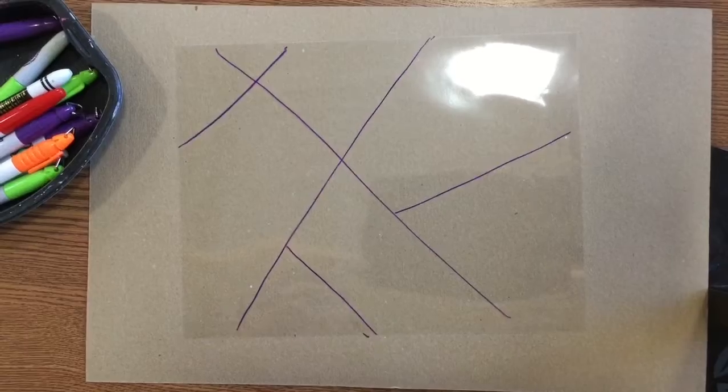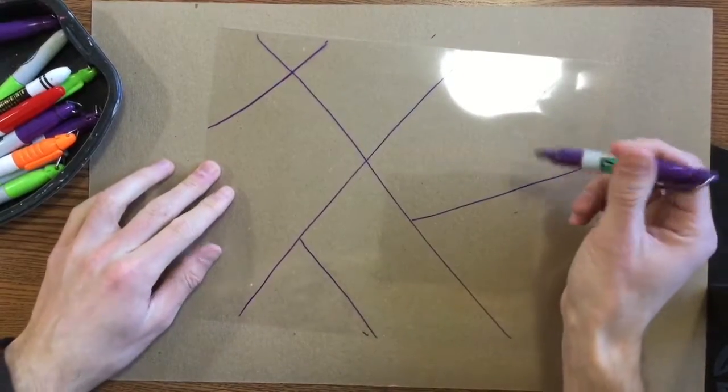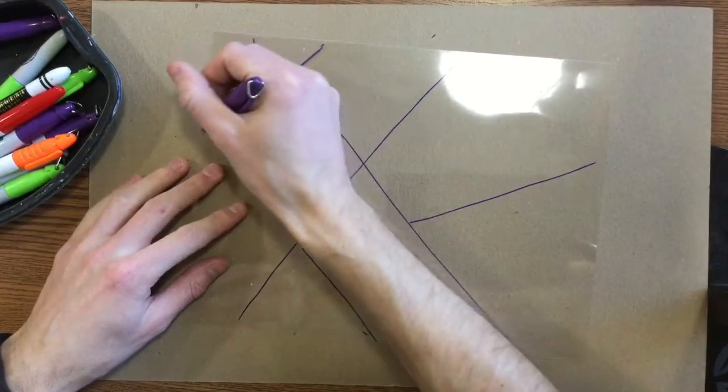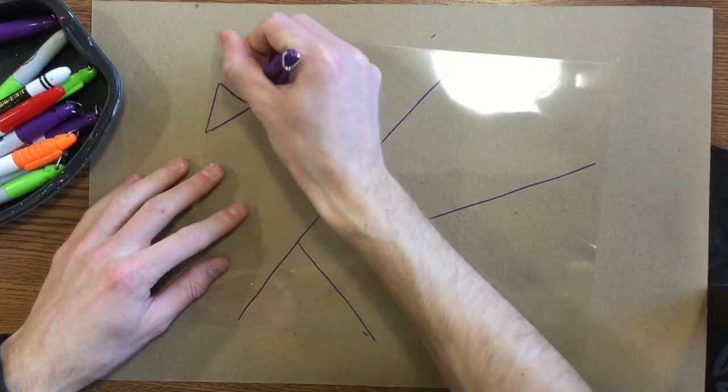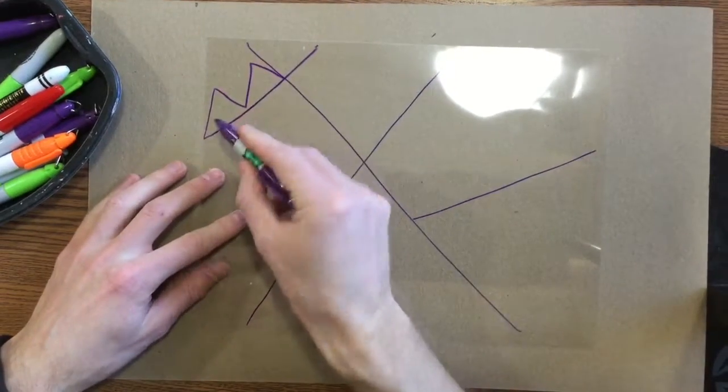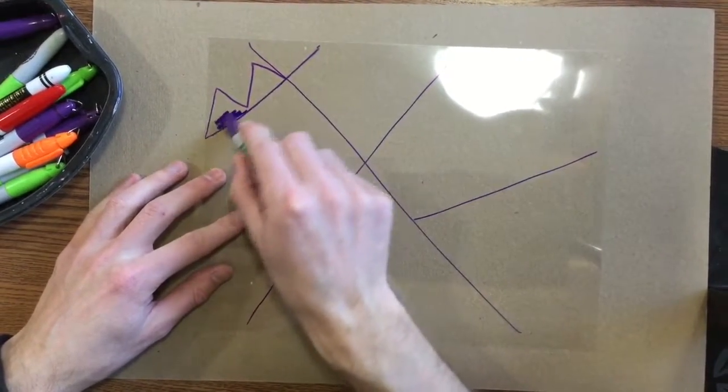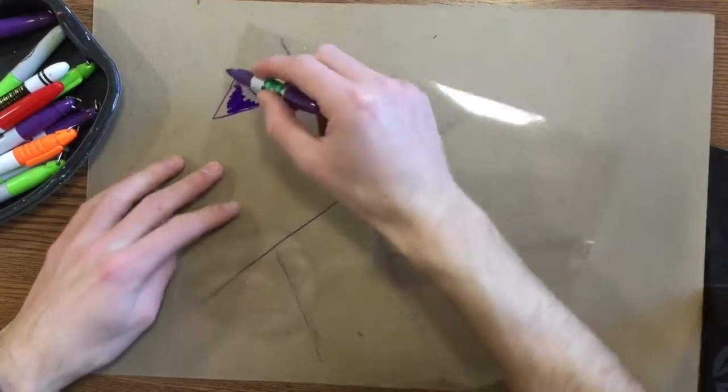Now I've got some lines drawn I can go in and I can start adding some patterns and other little designs. So think about some different lines we know. If you want to do some angles, try to color it in very nicely.